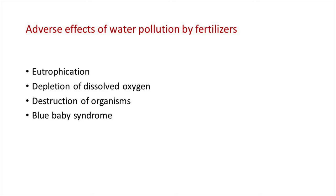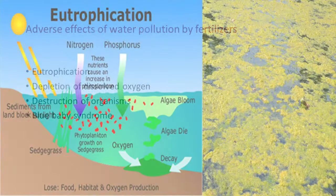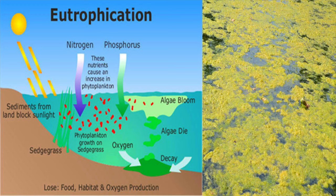The bloom-infested water inhibits the growth of other living aquatic organisms and causes their death. The anaerobic conditions created cause profuse accumulation of foul-smelling decay products. Thus fertilizer pollution of water leads to eutrophication — a process in which nutrient-enriched water bodies support a dense plant population that kills animal life by depriving it of oxygen, leading to subsequent loss of biodiversity. This also leads to depletion of dissolved oxygen and destruction of aquatic organisms.